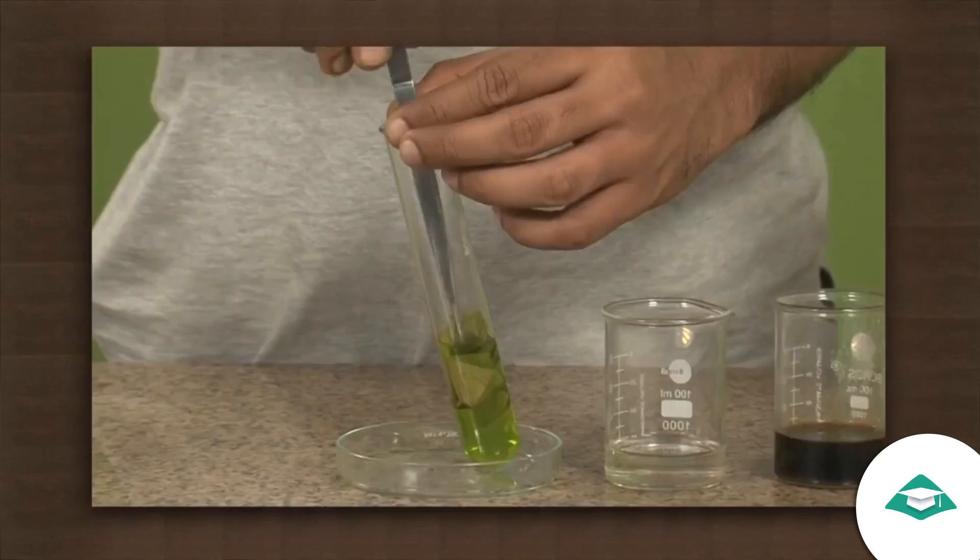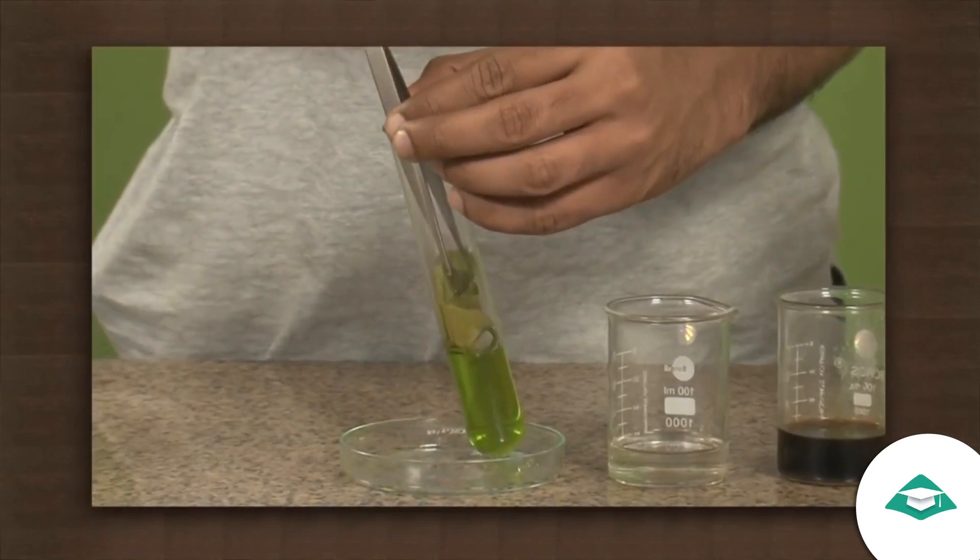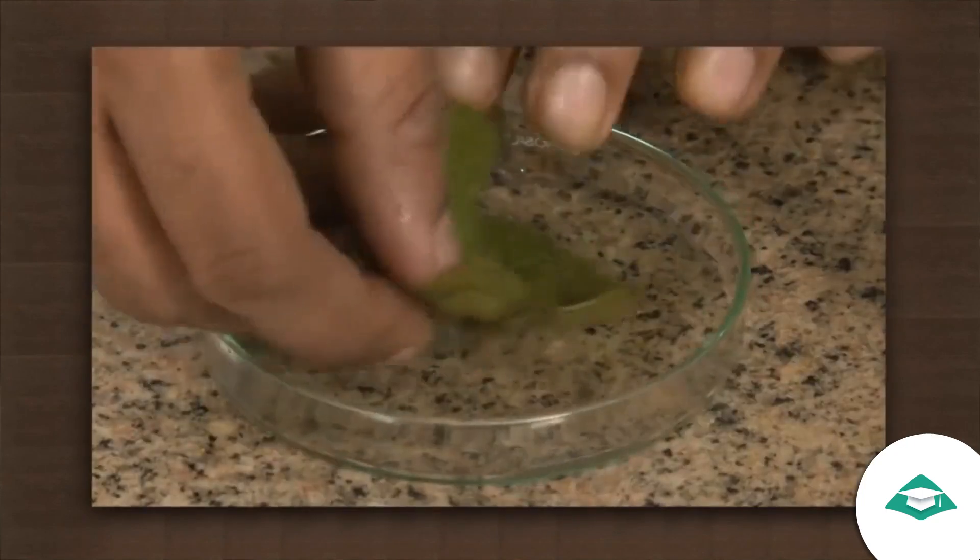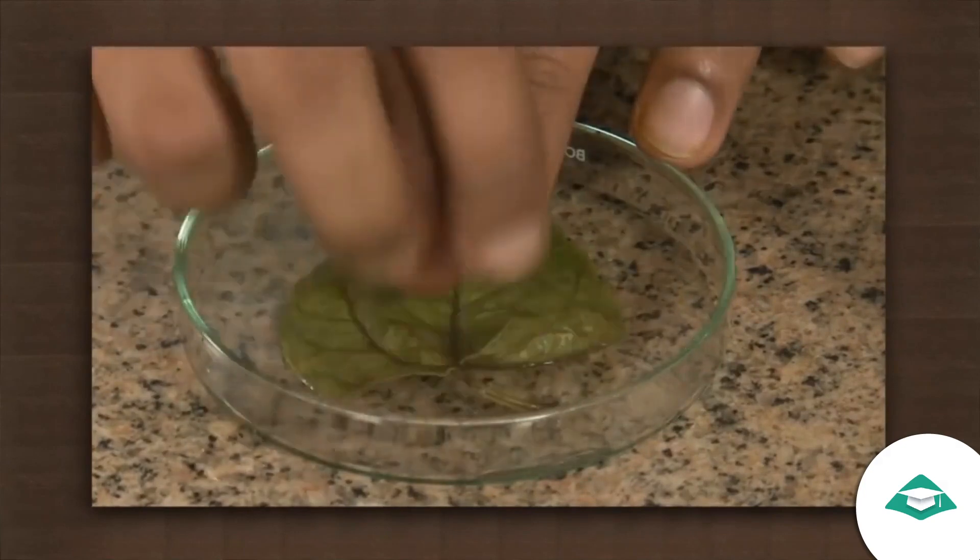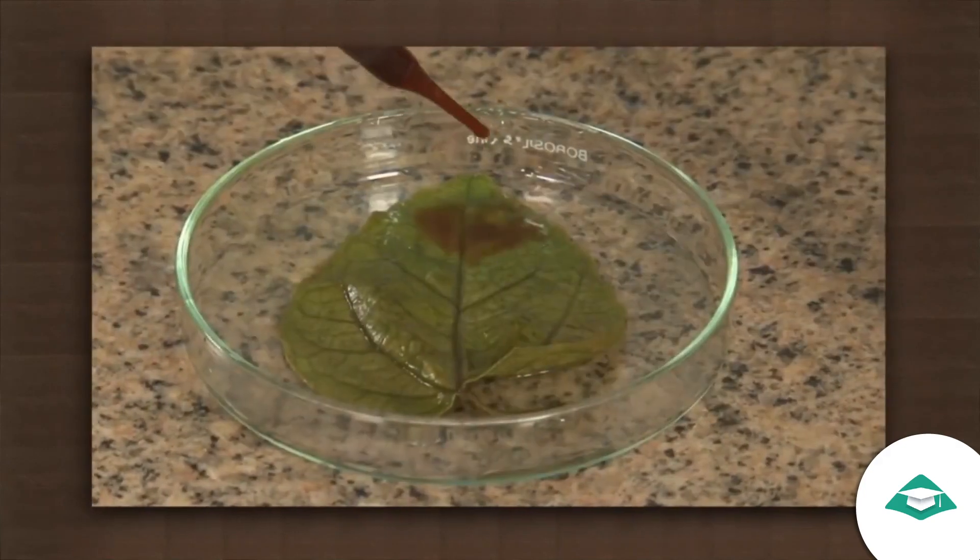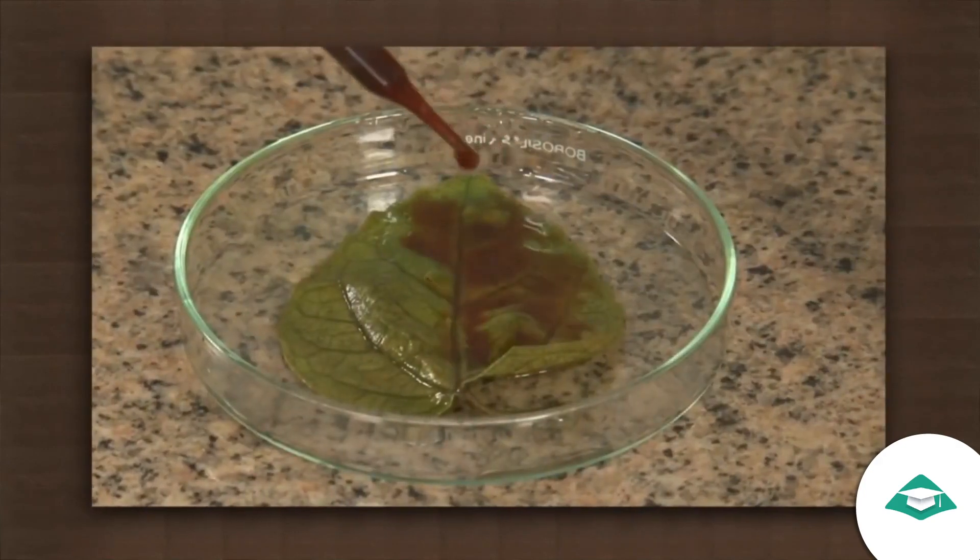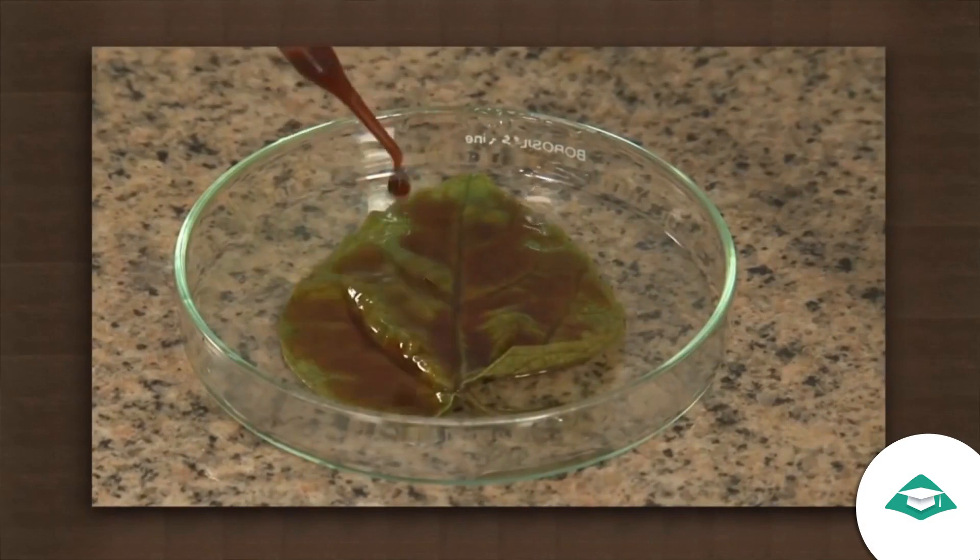The green color in the leaf was due to chlorophyll. Now take the leaf out of the test tube and place it again in the petri dish. Add a few drops of iodine solution on the leaf and observe the color change.